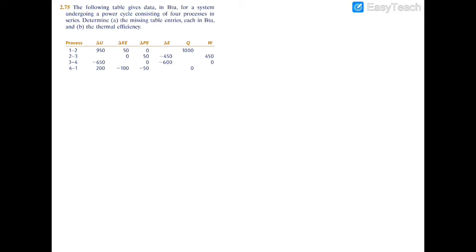This example is a power cycle, and we're going to undergo four different processes: 1 to 2, 2 to 3, 3 to 4, and 4 to 1. We need to fill in the missing entries in BTU and also determine the thermal efficiency of this process.